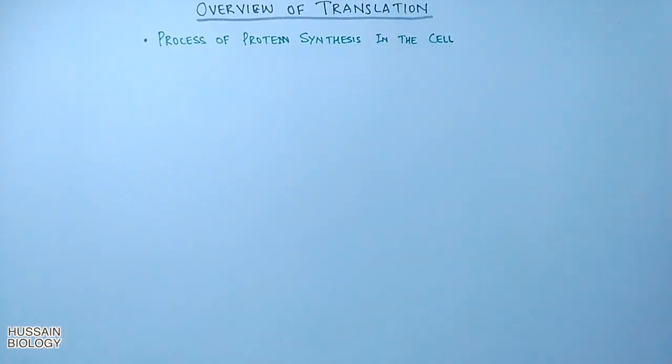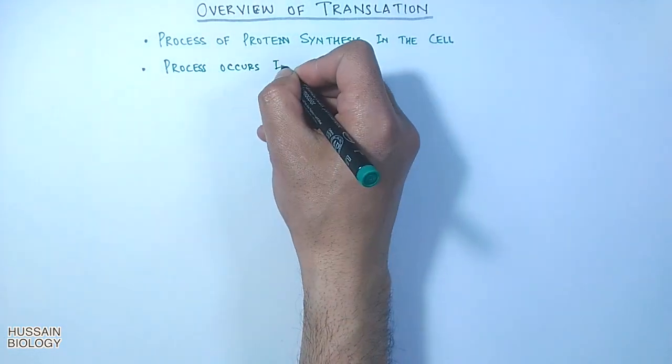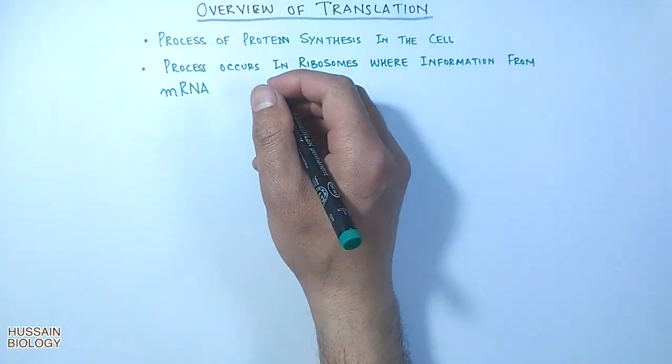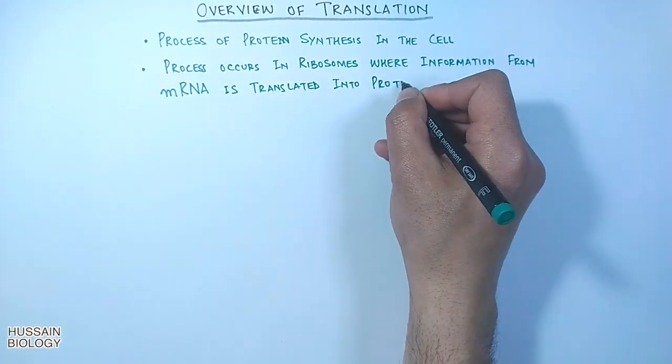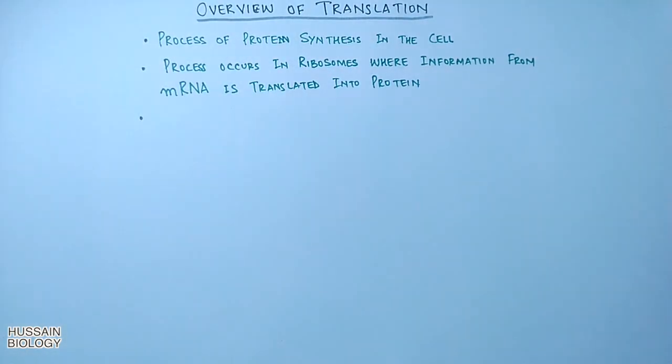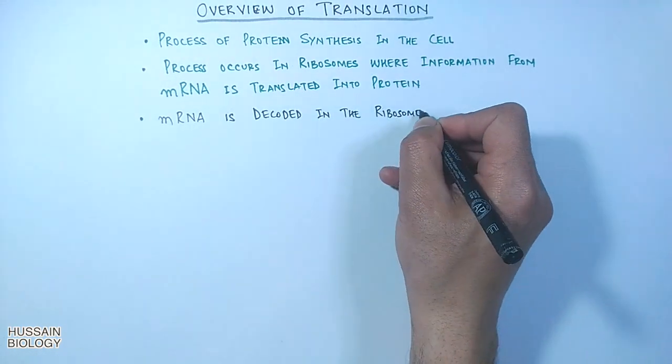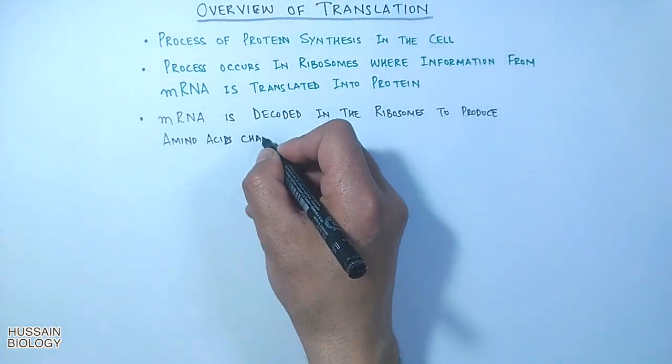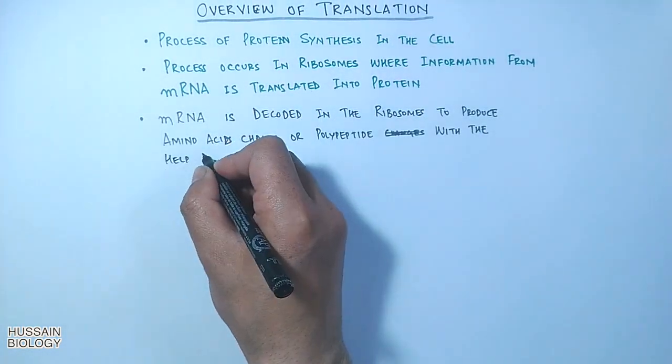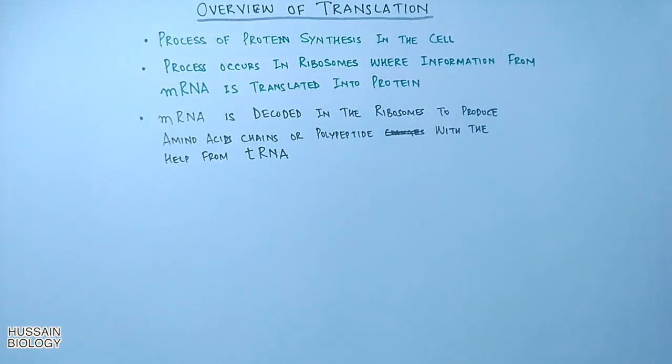This process occurs within the ribosomes where information from messenger RNA, or mRNA, is translated into proteins. The mRNA is decoded in the ribosome to produce amino acid chains or polypeptides with the help from tRNA.